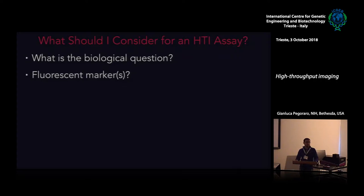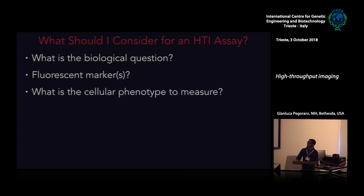The second question is: after I know what I want to measure, what reagent am I going to use to address my biological question? What are the fluorescent markers — is it a protein, an antibody? Is it a live cell or fixed cell experiment? Is it an immunofluorescence experiment? And what am I actually going to measure with image analysis — counts, differences in fluorescence intensity, number of cells?